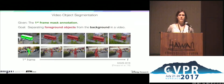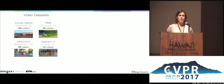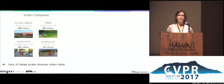In this work we want to address video object segmentation. Given the mask annotation in the first frame, the goal is to separate foreground objects from the background in a video. For video object segmentation there is a lack of large-scale densely annotated video data. Therefore, we propose to use static images for training.